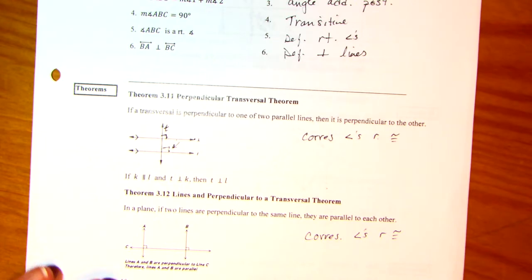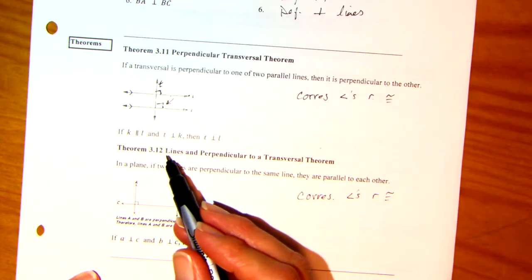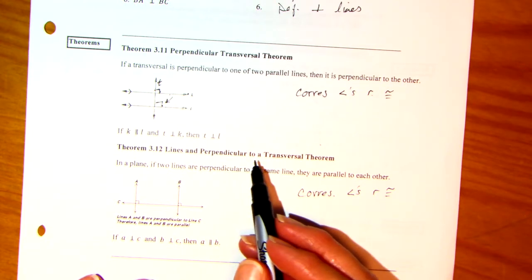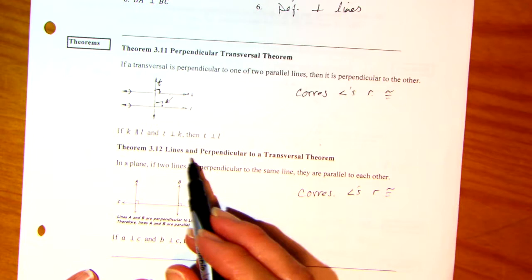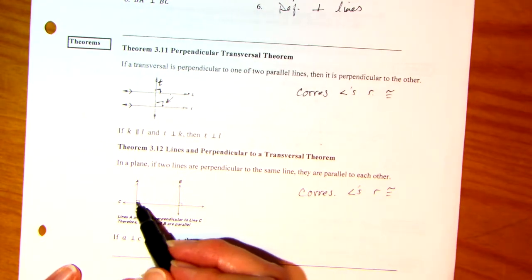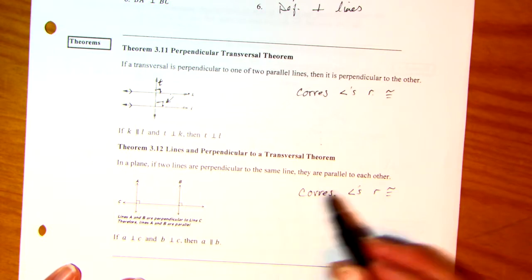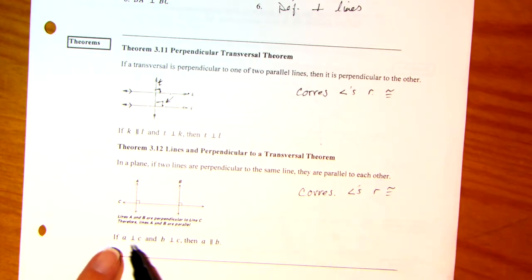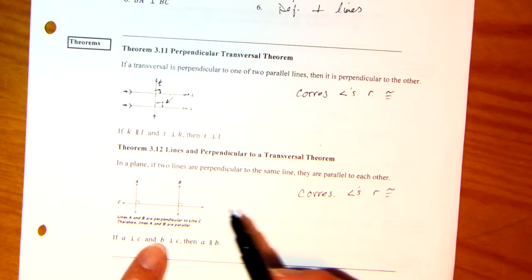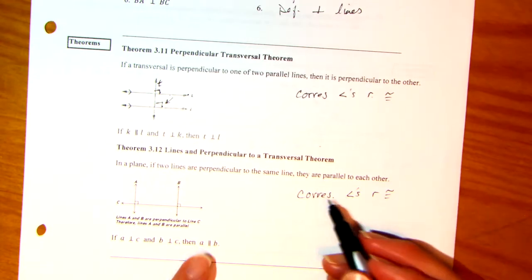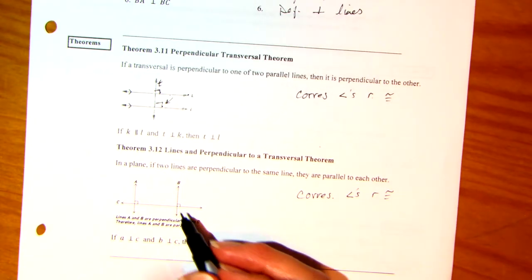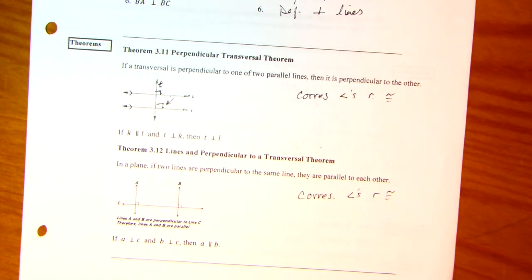Okay. The next one. Hi, boys. Theorem 3.12. Lines and perpendicular lines to transversal theorem. I think I have an error with that. In any case, in a plane, if two lines are perpendicular, okay, so I have this perpendicular here and this perpendicular here, then they're parallel to each other. So if A is perpendicular to C and B is perpendicular to C, that means these have to be parallel. And again, why? If they're perpendicular, you have two right angles. These two angles are corresponding. So again, corresponding angles are congruent. Theorem comes into play.